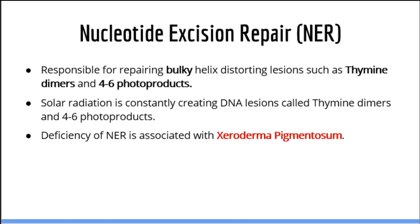We will start with nucleotide excision repair, or NER. NER is responsible for repairing bulky DNA lesions which distort the normal helix configuration of DNA. Examples include thymine dimers and 4-6 photoproducts, which typically occur due to exposure to solar radiation. These lesions are constantly occurring, and if not repaired before DNA replication, they can cause DNA polymerase to misread and insert the wrong base pair, leading to mutations.